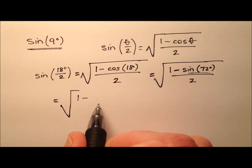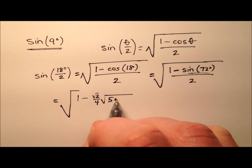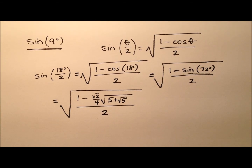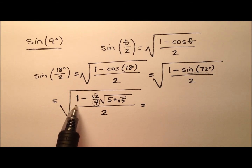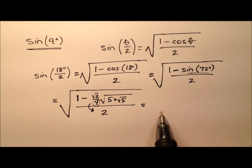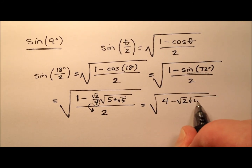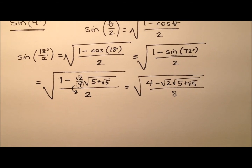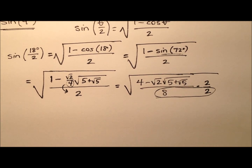So it's 1 minus the sine of 72 degrees, which is the square root of 2 over 4 times the square root of 5 plus the square root of 5 underneath that radical, all over 2. It looks like we have 1 minus with a denominator of 4, so let's multiply this 1 by 4 over 4, and those denominators of 4 can drop down with this 2 and become 8. So: 4 minus the square root of 2 times the square root of 5 plus radical 5, all over 8. We can multiply by 2 over 2 inside this radical so the denominator becomes a perfect square and we can take it out.